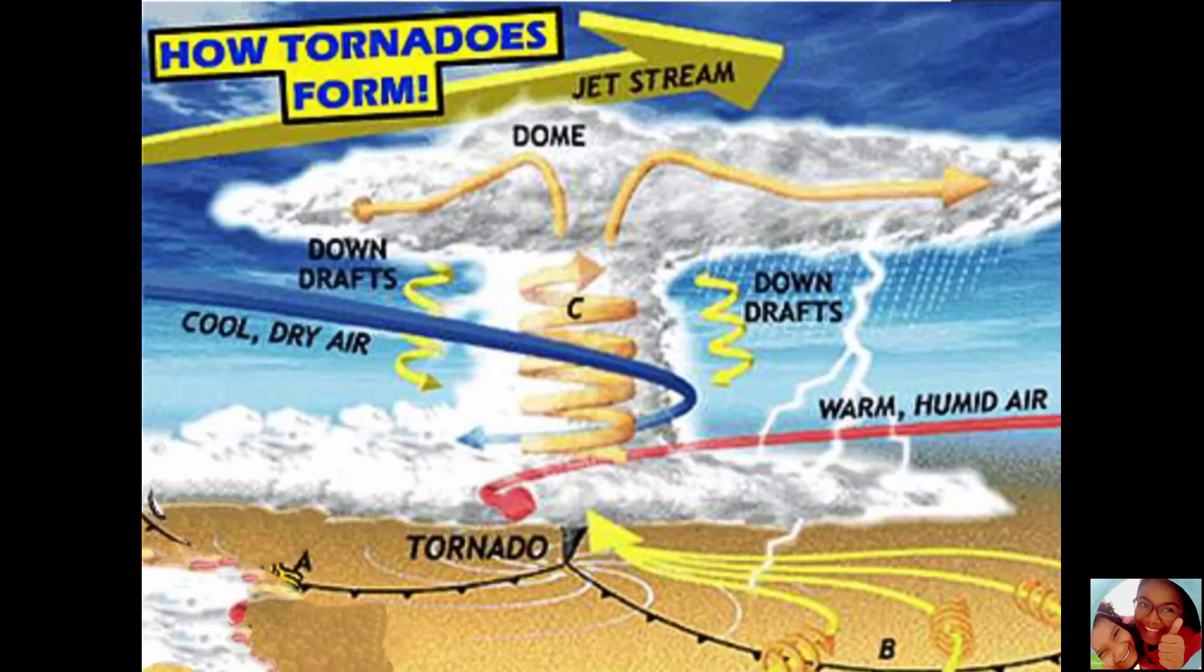A supercell creates a powerful thunderstorm. When cold dry air moving from one direction meets warm moist air coming from other direction, it creates instability in the atmosphere.